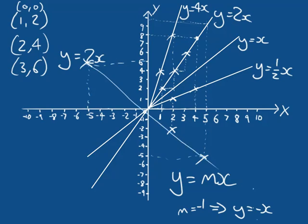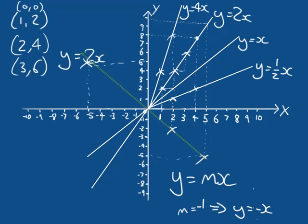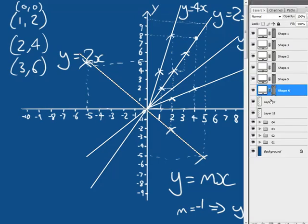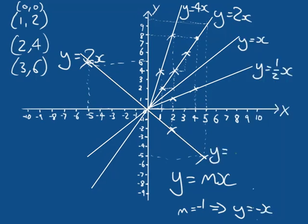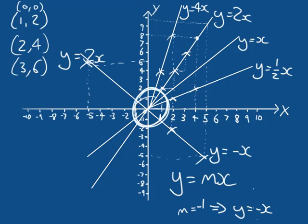Connecting these with a line, we get the line Y equals minus X. So already we can define a huge amount of lines by manipulating the gradient M value. But we're not quite done yet — this allows us to rotate our line all the way around, but we're still restricted to lines that are passing through the origin.